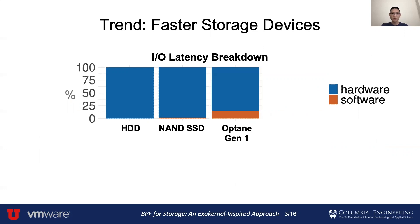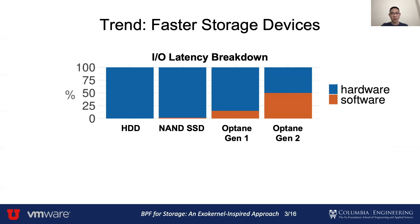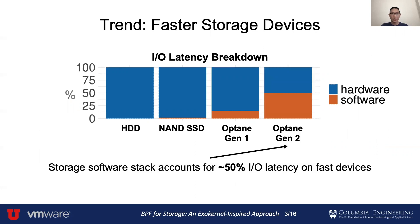For example, the storage software stack accounts for around 15% of the IO latency on the first generation of Intel Optane SSD. And for the second generation of Optane SSD, the software overhead is around 50% of the access latency.